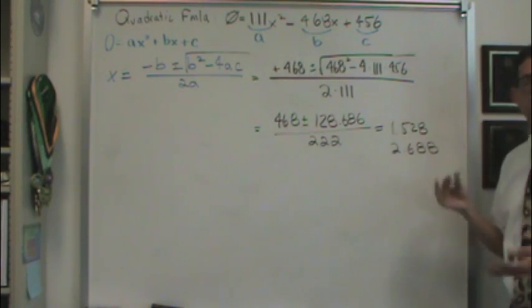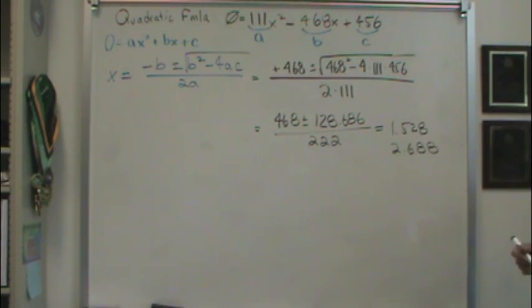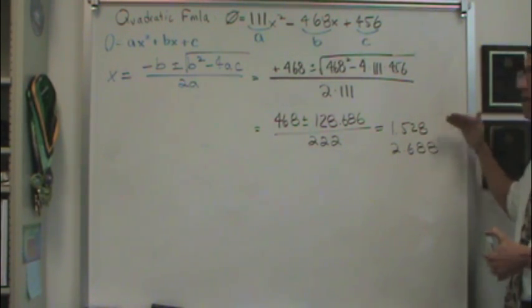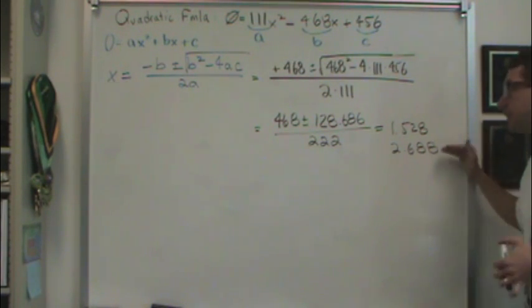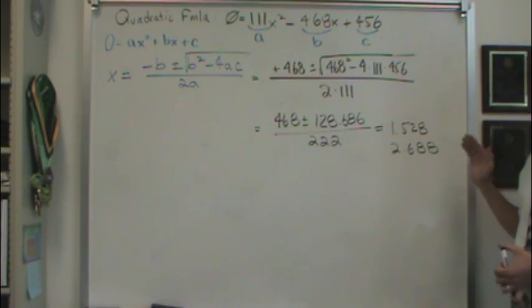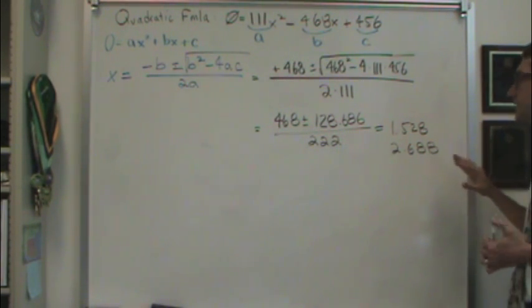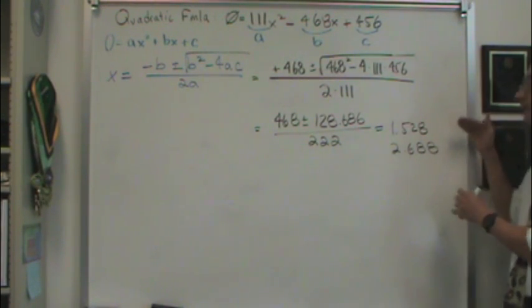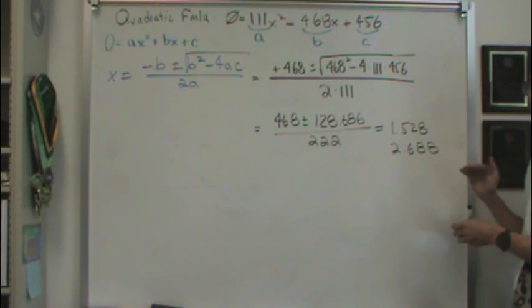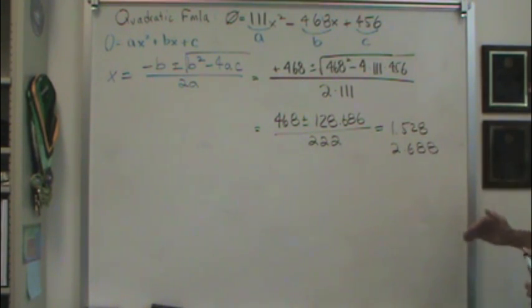In math, you can't distinguish between either answer, and both answers are correct. However, in chemistry, one of these is going to be correct, and one's not. You're actually going to see this calculation in class, and the chemistry is going to tell us which one of these two answers is the right answer. So that's your quadratic formula. You will get two answers, and here they are.